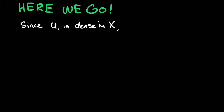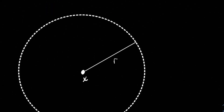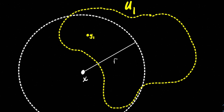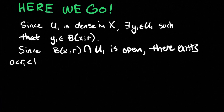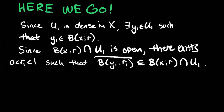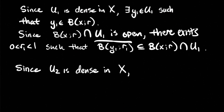U_1 is assumed to be a dense subset of X, so there exists Y_1 in U_1 such that Y_1 is in the ball centered at x of radius R. We have the intersection of two open sets, which is open, so there exists a radius R_1 — which we can take smaller than 1 — such that the closure of the ball centered at Y_1 of radius R_1 is contained in both the ball centered at x and in U_1.